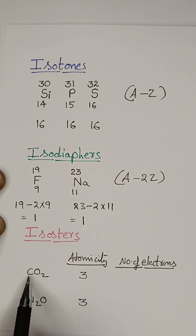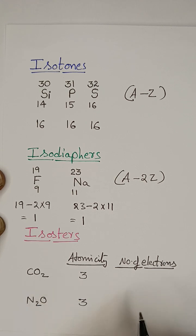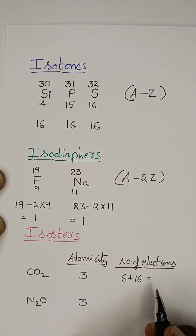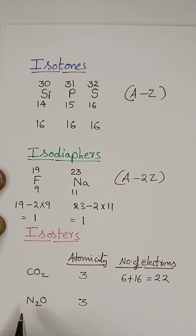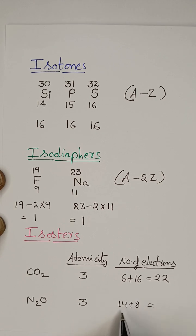Next, number of electrons. Carbon has atomic number 6, plus oxygen has atomic number 8, giving 8 plus 8 equals 16. So 6 plus 16 equals 22 electrons for CO2. For N2O: nitrogen atomic number is 7, so 7 plus 7 equals 14, plus oxygen 8, giving 14 plus 8 equals 22 electrons.